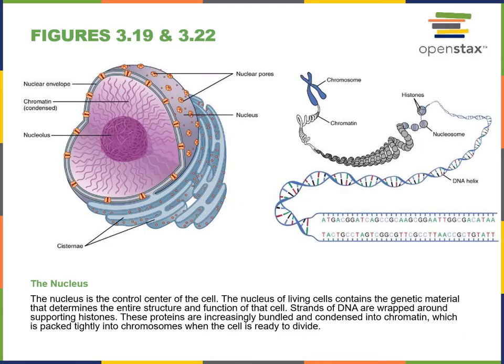DNA, or deoxyribonucleic acid, is the chemical that functions as the genetic instructions for cells. DNA is found inside of the nucleus. During interphase of the cell cycle, DNA is loosely wrapped around histone proteins forming the structure known as chromatin, which is uncondensed and spread out through the nucleus.